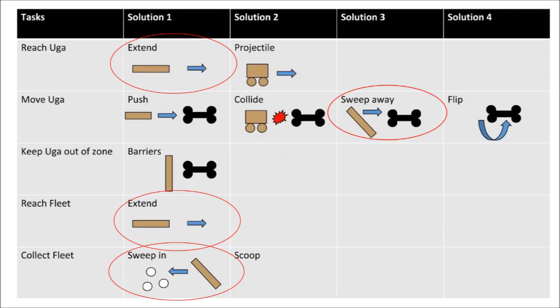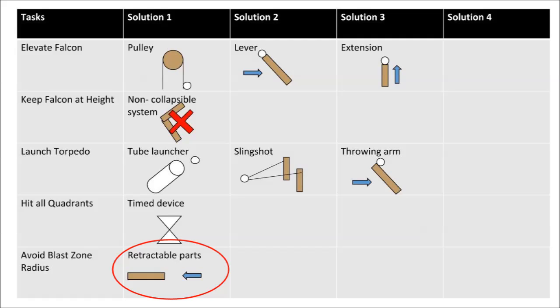Firstly, in the Remove EGAs from Zone sub-function, the safest solution would be to completely remove the bone from the arena. However, this solution may end up benefiting the competition as well, so it is yet to be determined if the solution's benefits outweigh its potential downsides. Secondly, the solution of reaching the bone is similar to the reaching the fleet sub-function, presenting the possibility that one solution can be implemented to achieve multiple sub-functions. Lastly, the Avoid Blast Zone sub-function will prove to be interesting as it is the only sub-function dependent on the solutions of the other sub-functions.